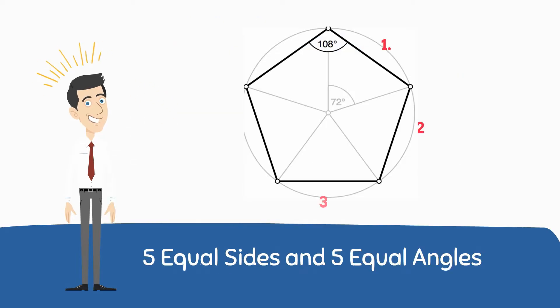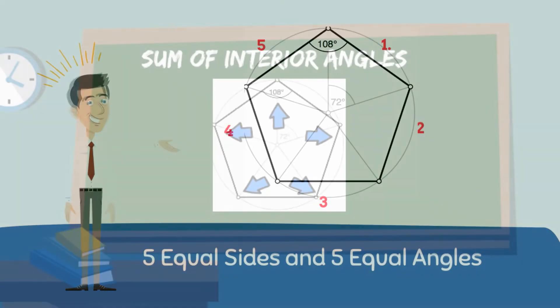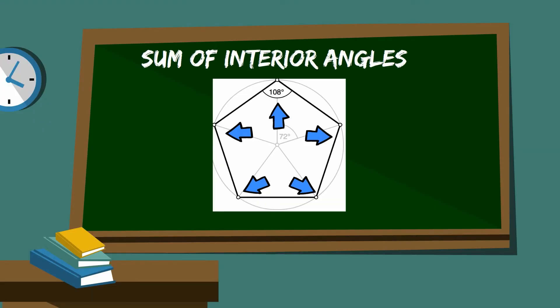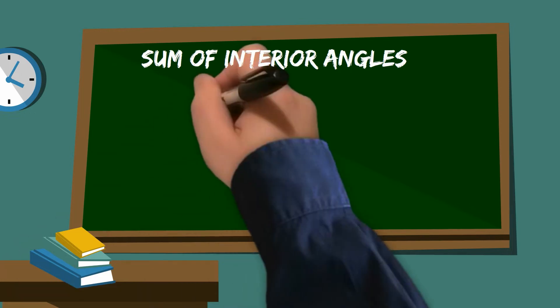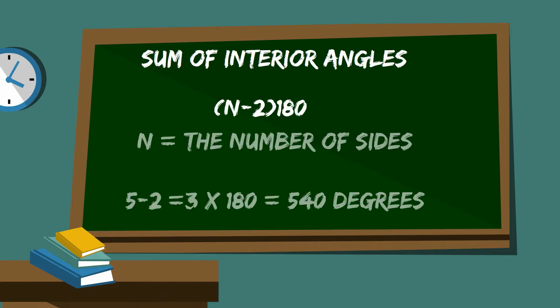A regular pentagon has 5 equal sides and 5 equal angles. The general formula for the sum of all the interior angles of a polygon equals n minus 2 times 180, and n equals the number of sides.